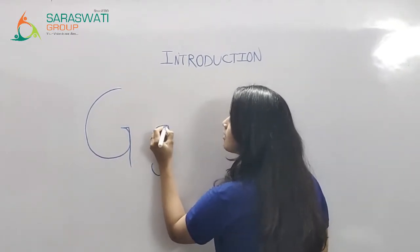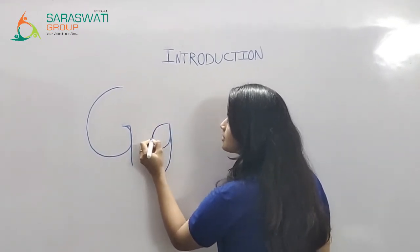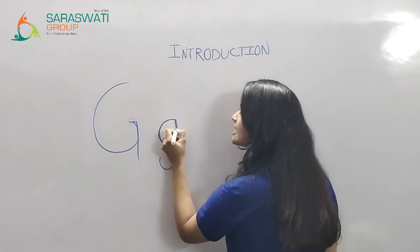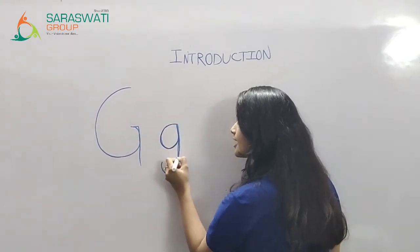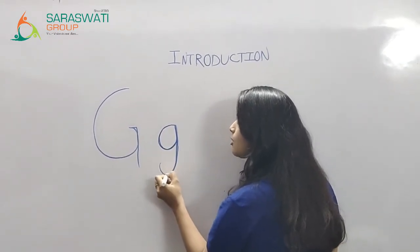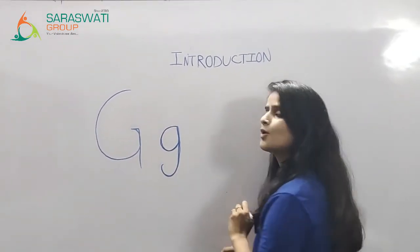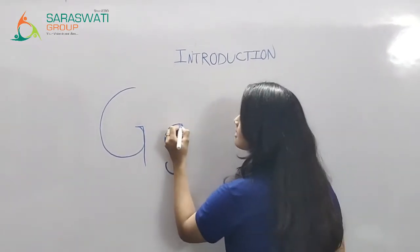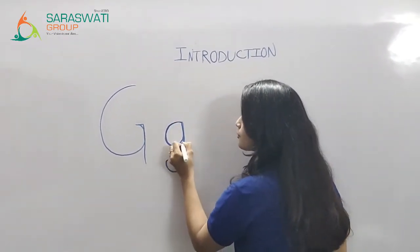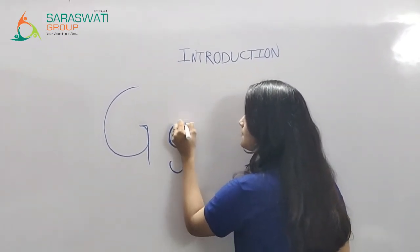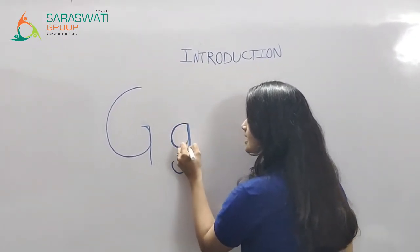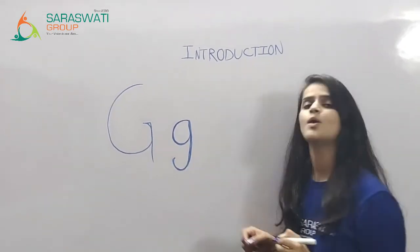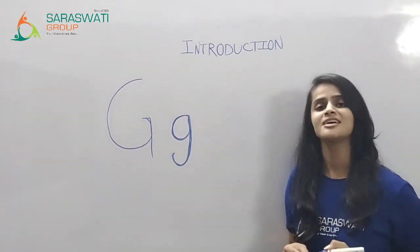First of all, come, go up, standing line and small come. Lowercase G. Come, go up, standing line and small come. Lowercase G.